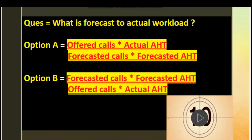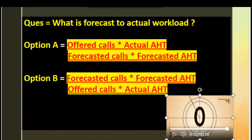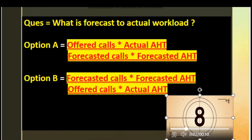The third question is: what is forecast to actual workload? Option A: offered calls multiplied by actual HD, divided by forecasted calls multiplied by forecasted HD. Option B: forecasted calls multiplied by forecasted HD, divided by offered calls multiplied by actual HD. The correct answer is Option A: offered calls multiplied by actual HD, divided by forecasted calls multiplied by forecasted HD.